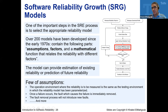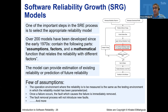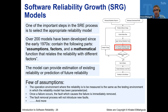In general — not only for software reliability — any model has some assumptions and factors that you really need to understand, because not every model fits everything. There is no one-size-fits-all in modeling. We have more than 200 models related to software reliability. Each of those models has some assumptions, some factors, and a mathematical function that relates quantities to each other.